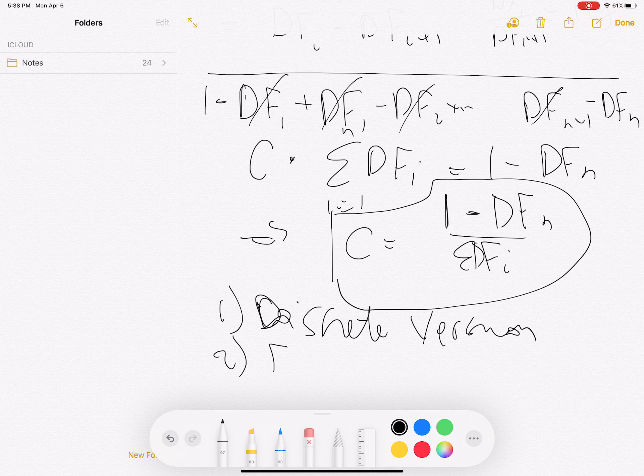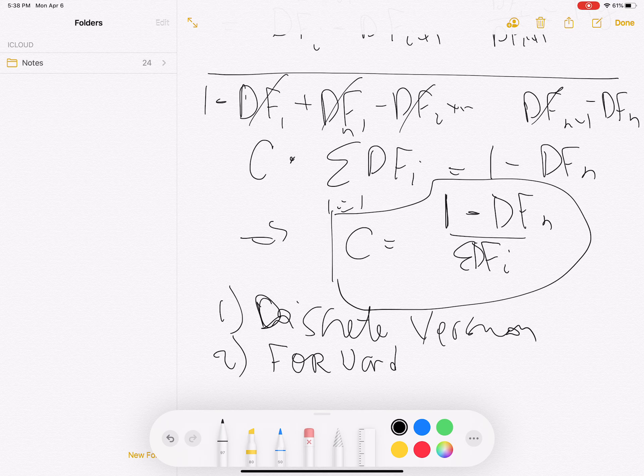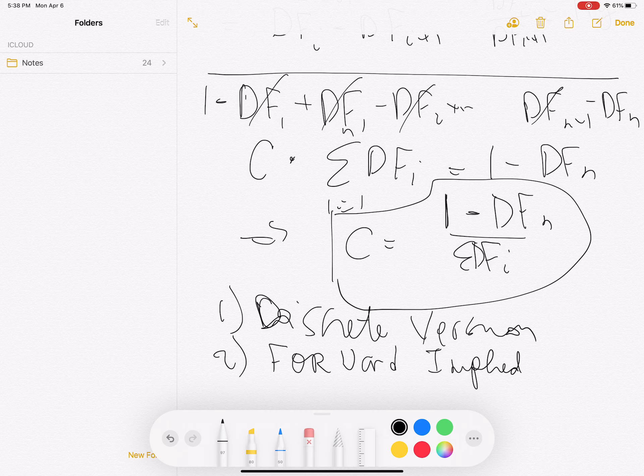I'll give you a little bit of homework on that. The forward rate, the implied forward rate, is exactly going to be what I gave you here: it is going to be DFi divided by DFi+1 minus 1.